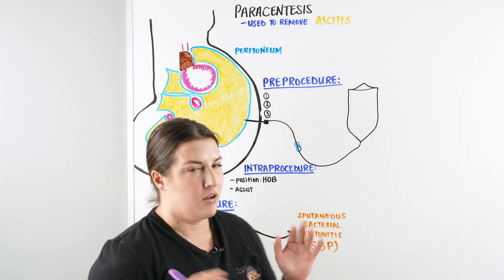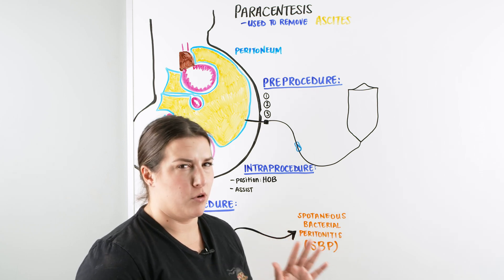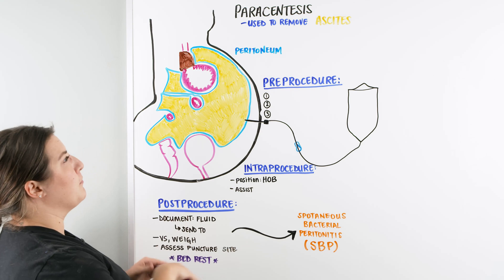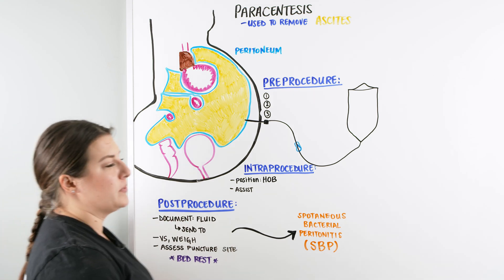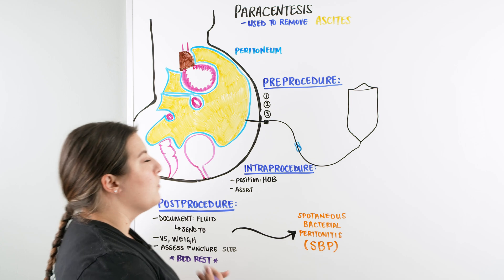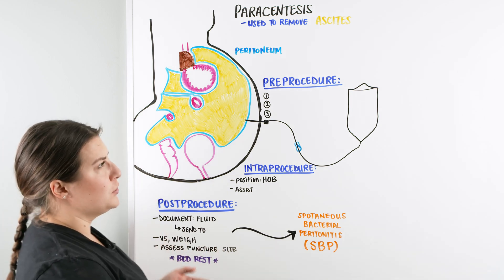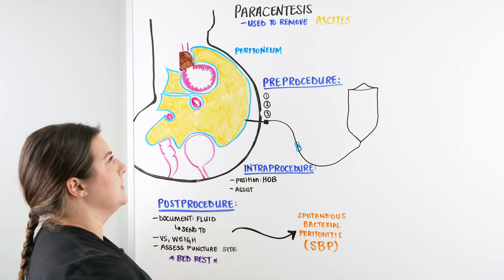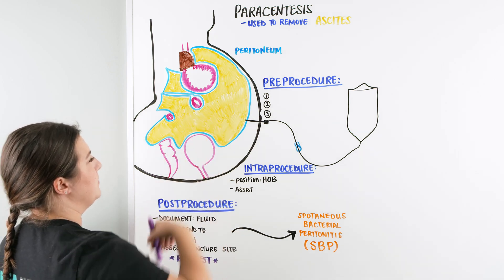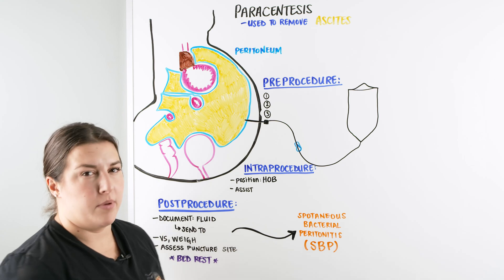We just talked about cirrhosis of the liver or any type of liver dysfunction where the patient can develop extra third spacing of fluids. Typically, that third spacing of fluid within the abdominal cavity is called ascites, and it is located within the peritoneum.